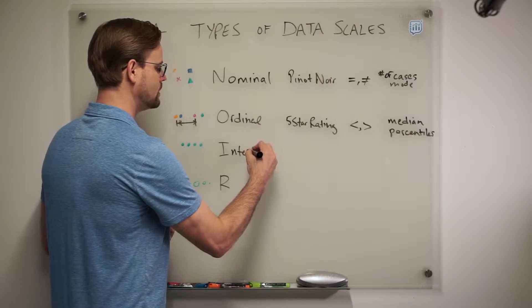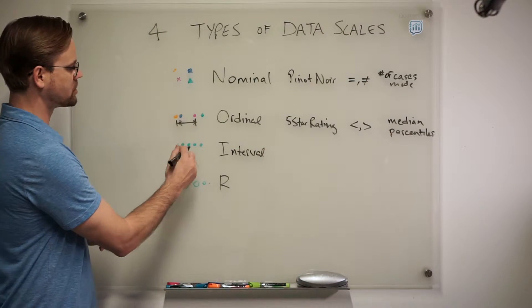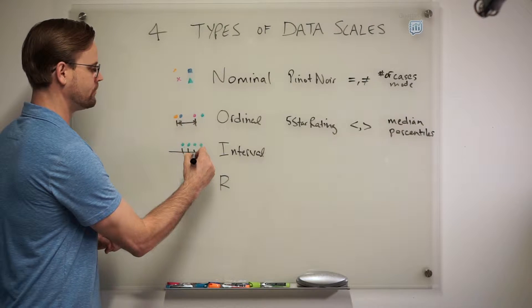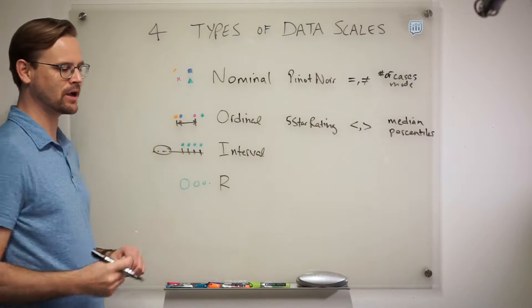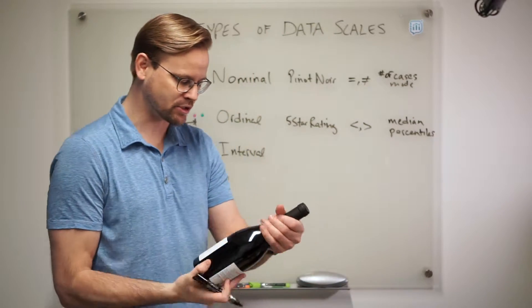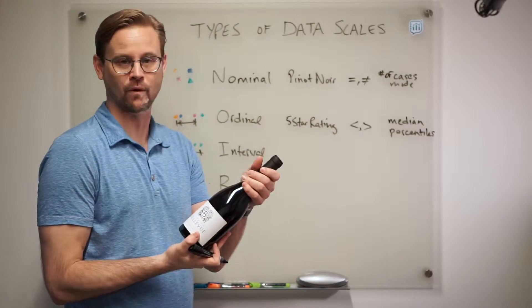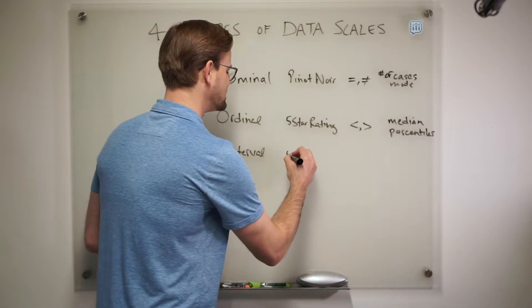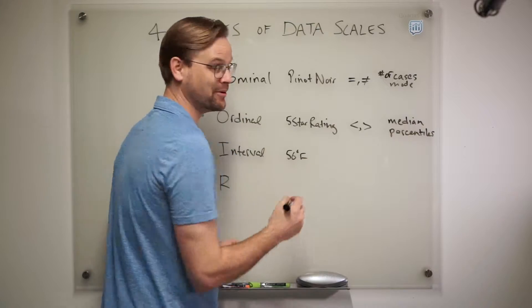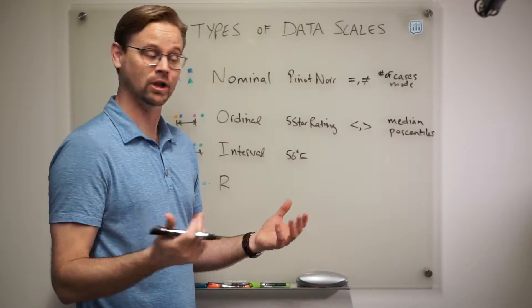So that's what comes with our third data scale type, which is interval. You can see now the symbols are an equal distance apart. But what's interesting about interval is that there's no absolute zero. This could be like maybe the temperature. Maybe I want to serve up this bottle of wine to a guest of mine at 56 degrees Fahrenheit, because everybody knows that's what you serve Pinot Noir at.